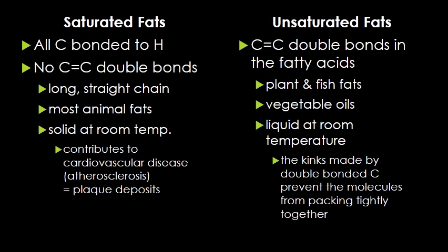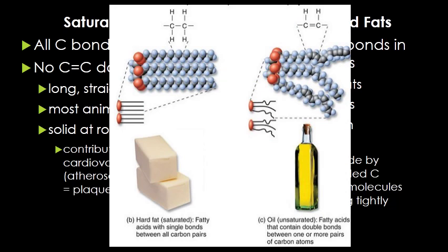The difference between a saturated fat and an unsaturated fat lies in the fatty acid chains. In a saturated fat, all the carbons are bonded to hydrogens with no double bonds — these are long, straight molecules, mostly animal fats, solid at room temperature, and are the ones that contribute to heart disease. Unsaturated fats have double bonds, causing bends and kinks in the molecule, which prevent them from packing closely together, keeping them liquid at room temperature. Plant fats, fish fats, and vegetable oils are all unsaturated fats.